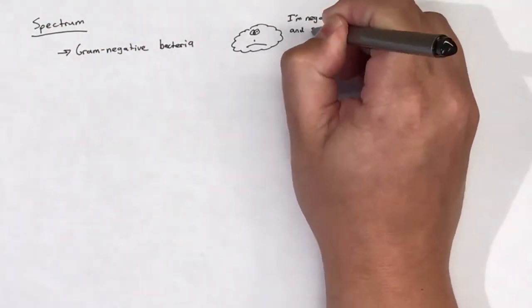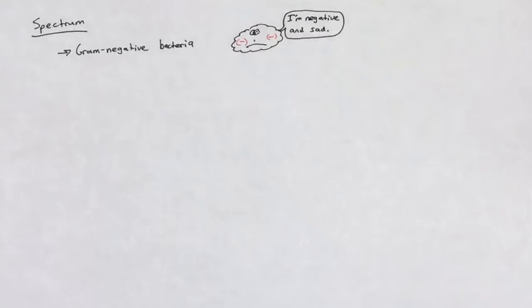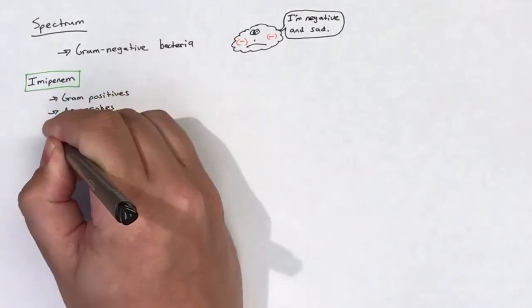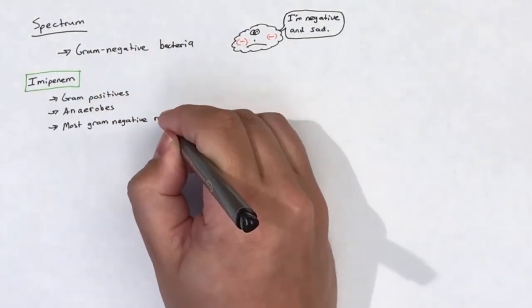Carbapenems as a class are good agents for targeting gram-negative bacteria. Imipenem has a fairly wide spectrum with activity against gram-positives, anaerobes, and most gram-negative rods, including P. aeruginosa.